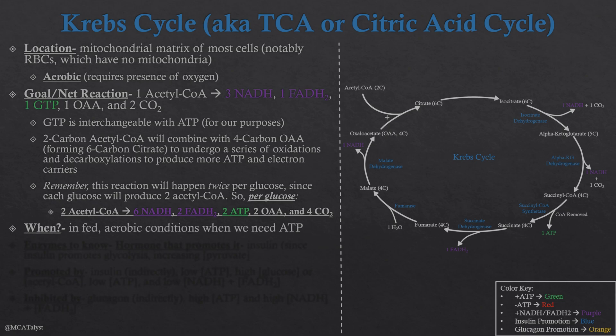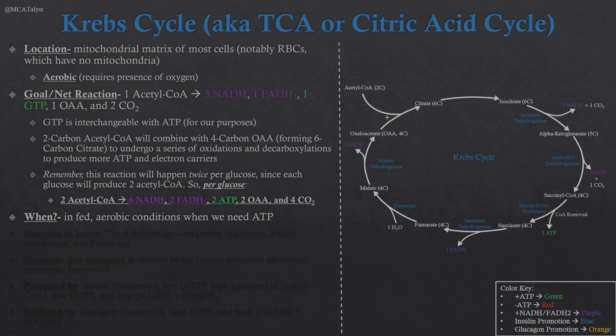We are going to be doing the Krebs cycle in the fed postprandial state, and additionally in aerobic conditions when we need ATP. Like we mentioned with the PDC, we cannot use mitochondrial processes when oxygen is not present, so we need aerobic conditions to actually run the Krebs cycle. Technically the Krebs cycle is always on, but for the purposes of the MCAT it is mainly prioritized in the postprandial condition.